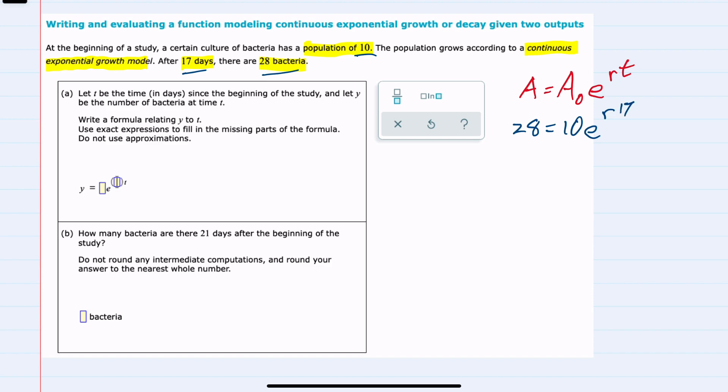The only variable is r, so we can solve for r by dividing both sides by 10. This gives us 2.8 equals e to the 17r.